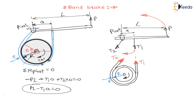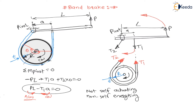The applied moment is in the anti-clockwise direction and the moment due to tension T1*A — also called the frictional moment — is in the clockwise direction. Since the applied moment and frictional moment are in opposite directions, the band brake is not self-actuating and not self-energizing. In a previous lecture on shoe brakes, we saw that when frictional moment and applied moment are in the same direction, it is self-energizing — but the band brake is not.